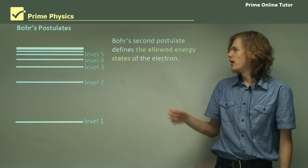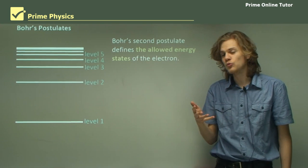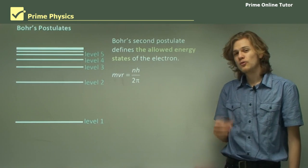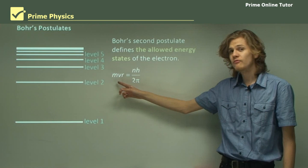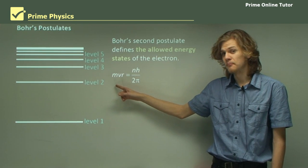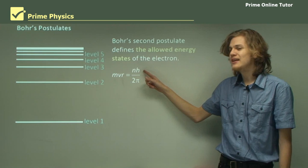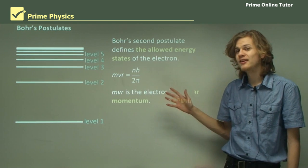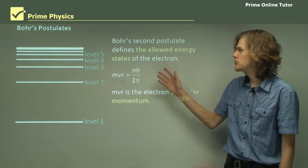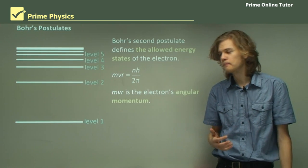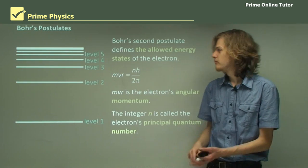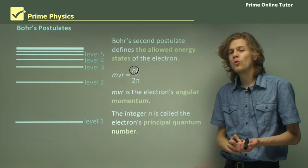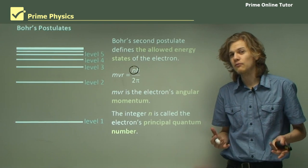So Bohr's second postulate defines the allowed energy states of the electron. So we have energy level 1, 2, 3, 4, and so on. The equation he came up with was MVR, which is the angular momentum of the electron, equals nh over 2 pi. This is sometimes known as the rule of quantized angular momentum. And the integer n on the right side of the equation is called the electron's principal quantum number. It corresponds to the energy level of that electron.